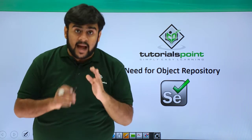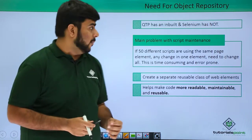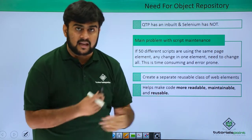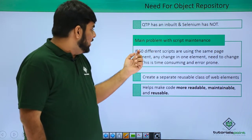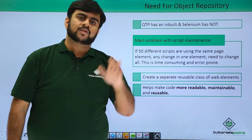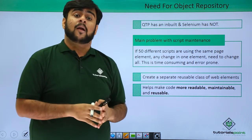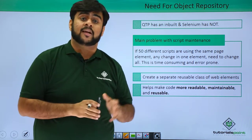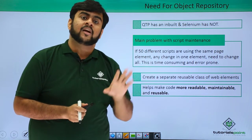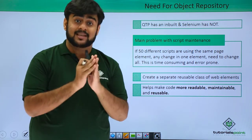Now let's look at why we actually need an object repository in Selenium. QTP has an inbuilt object repository and Selenium does not. So what is the problem? Say if you are having 50 different scripts on the same page — on one script you are checking whether you are able to log in or not, on another you are validating customization like whether the login text is right, whether the hints are shown right, what happens if the user is not able to log in. So there are 50 different test cases.